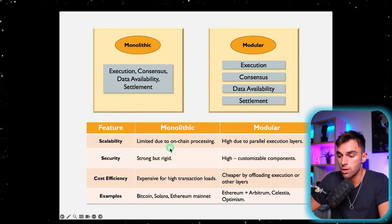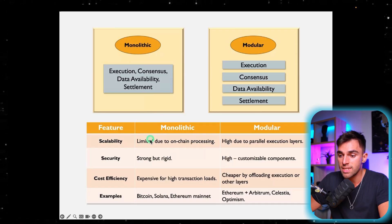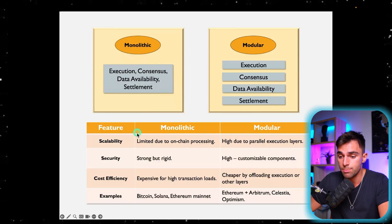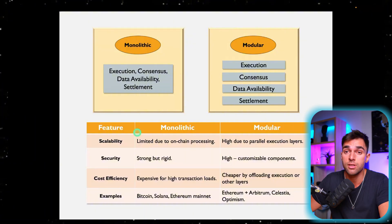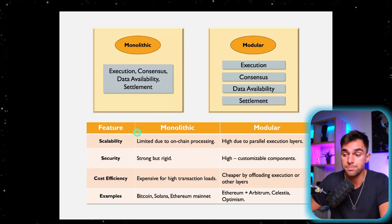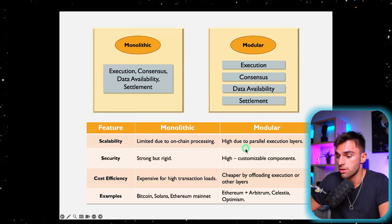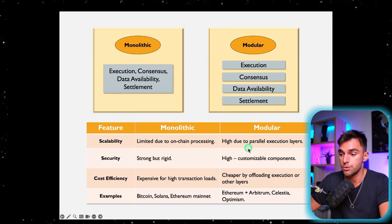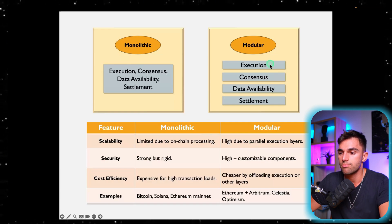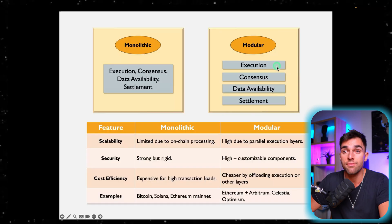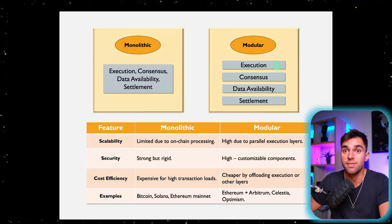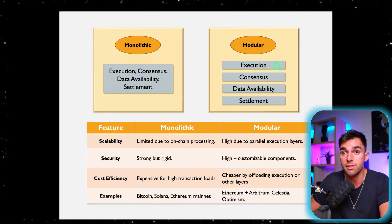Monolithic blockchains have limited scalability due to on-chain processing. Because every single node in the blockchain has to perform all of these functions, it's inherently slow and not scalable. Modular blockchains, on the other hand, achieve high scalability due to parallel execution layers. The whole point of modular blockchains is they've created separate layers for different functions so that each layer can be more efficient at handling its component of the job.